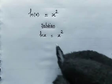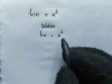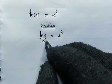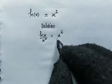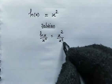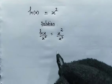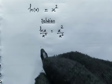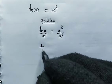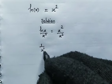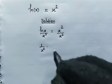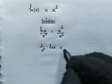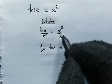From here, let's divide both sides by x to the power of 2. So here we divide by x to the power of 2, and from here also by x to the power of 2. Now from here, this can be written as 1 divided by x to the power of 2, multiplied by the natural log of x. Then this equals 1.